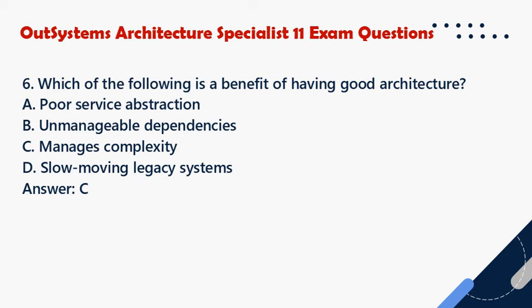Question 6. Which of the following is a benefit of having good architecture? a. Poor service abstraction. b. Unmanageable dependencies. c. Manages complexity. d. Slow-moving legacy systems. Answer: C.